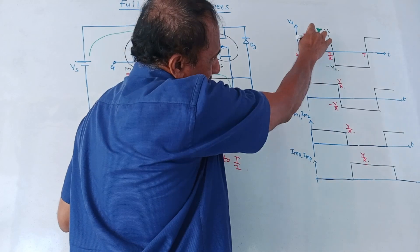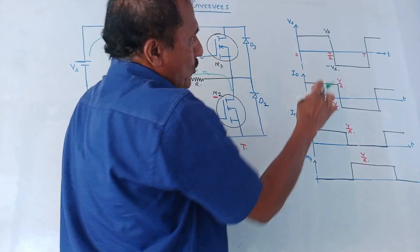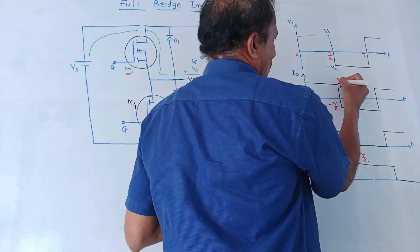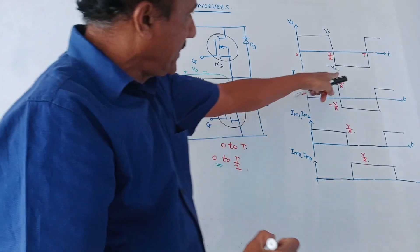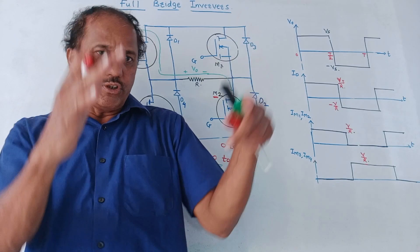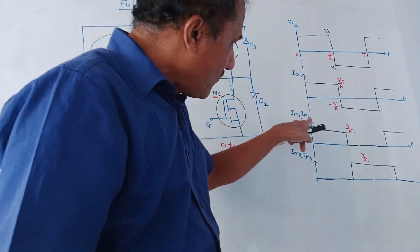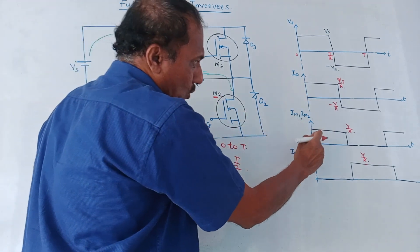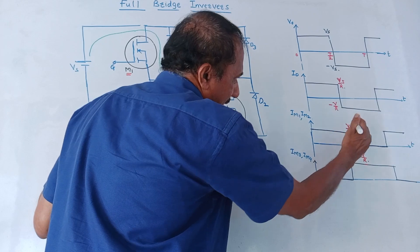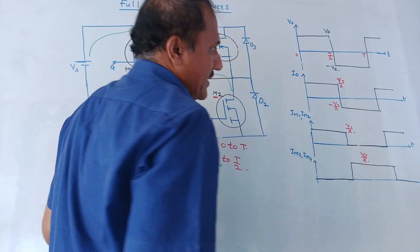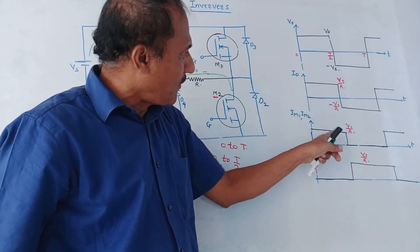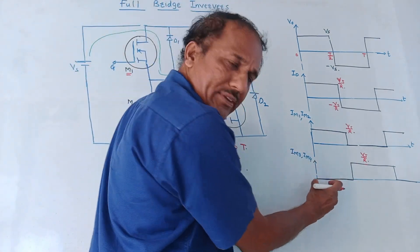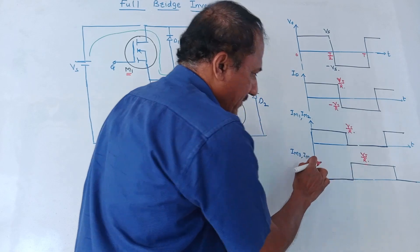The output current I0 will have the same nature as output voltage V0, and its value is Vs/R, since the basic equation of current is voltage divided by resistance and the input voltage is Vs. The current through MOSFETs M1 and M2 — IM1 and IM2 — is also Vs/R during 0 to T/2, the same as I0. However, MOSFETs M3 and M4 are switched off, so they are acting as open switches and there is no current through M3 and M4.